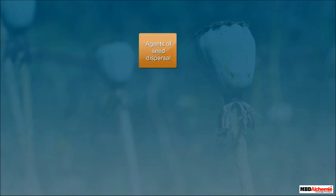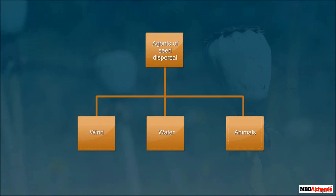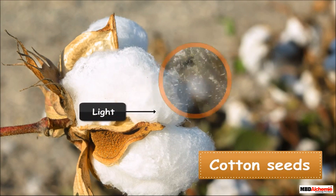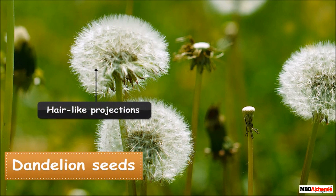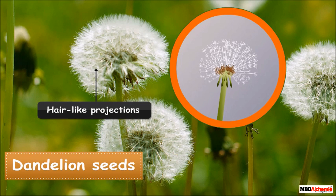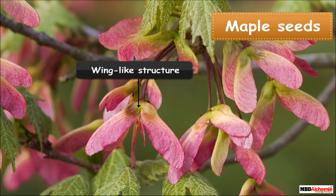In contrast, there are seeds of certain plants that need some agents for their dispersal. These agents can be wind, water or animals. Seeds of some plants like that of cotton are very light and are dispersed by wind. Seeds of some plants like that of dandelion have hair-like projections that help them to be carried by the wind. Similarly, seeds of some plants like that of maple have a wing-like structure. These seeds are also carried by wind and thus dispersed.